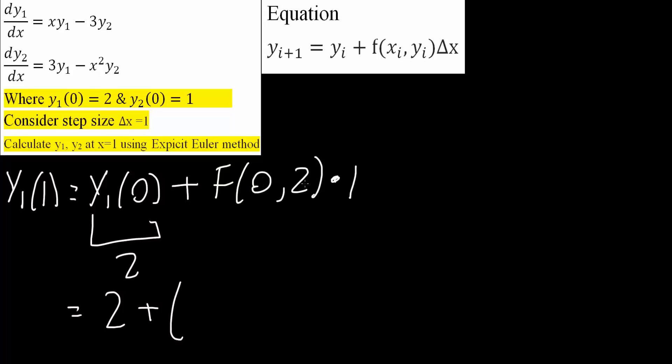0 is for x, 2 is for y. And so we put it in this equation right here. So we would get, so x is 0, so 0 times yi, yi we know would be 2, so times 2, minus 3 times y2. y2 would be this number right here, which is 1, so times 1. And multiply our step size. So we would get negative 1. And this is the value for y1.